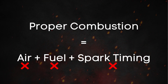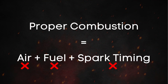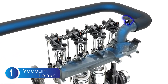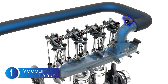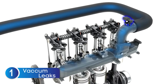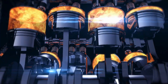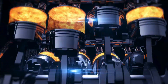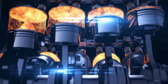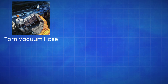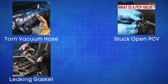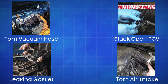First up, vacuum leaks. A vacuum leak allows unmetered air to enter the engine, throwing off the air-fuel ratio and causing the mixture to run too lean, which leads to misfires. Common locations for vacuum leaks include a torn vacuum hose, a stuck-open PCV valve, a leaking intake manifold gasket, or anything torn in the air intake system after the MAP sensor.